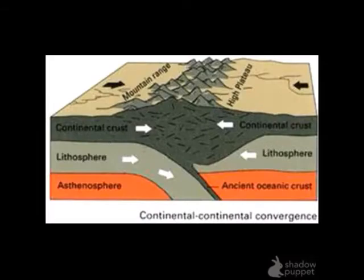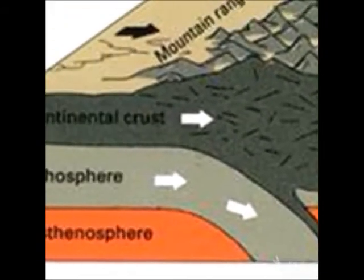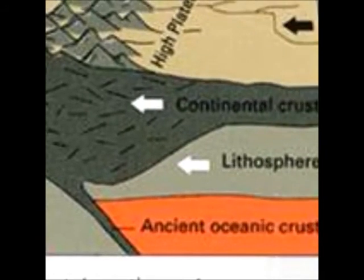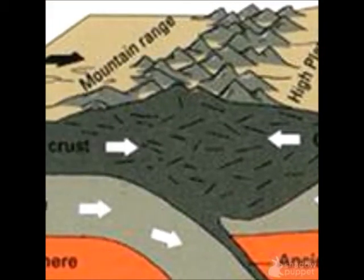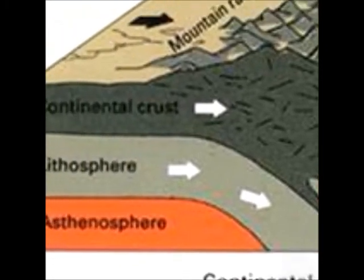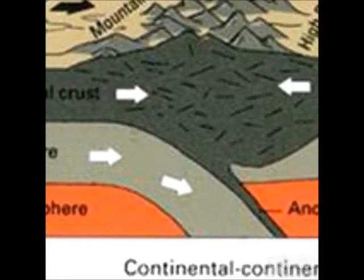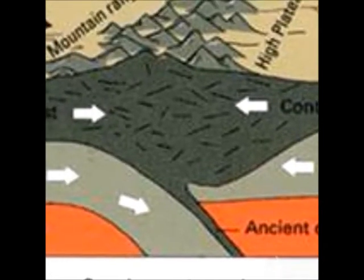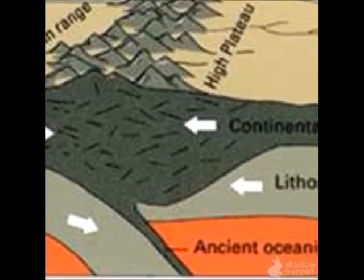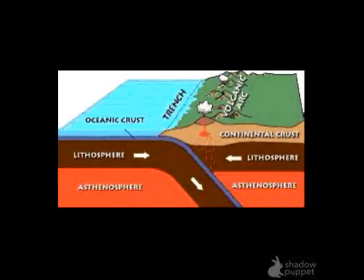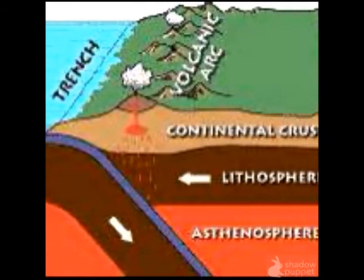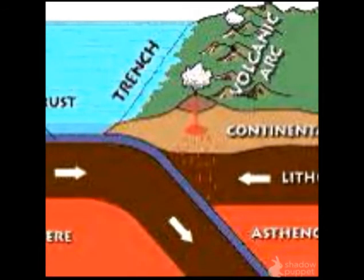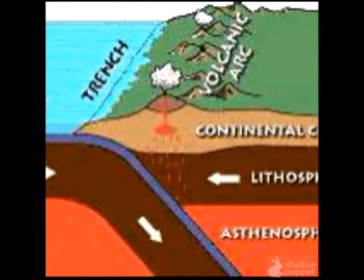Here's a picture: continental crust joining another continental crust with a mountain range forming at the top, and part of the crust subducting down underneath into the mantle. Here's another picture — an oceanic crust and a continental crust colliding. We've got volcanoes forming, subduction, and a trench.